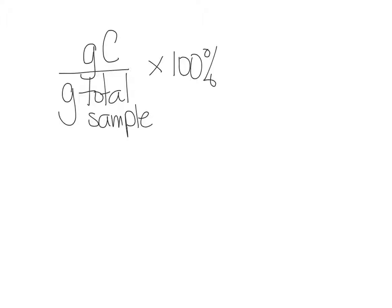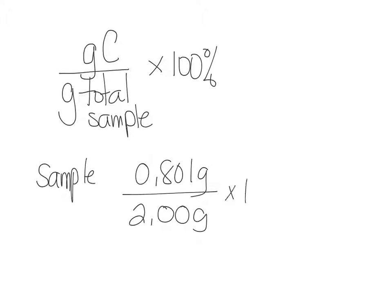How much carbon was in sample one? 0.801 grams. What was the grams of our sample? It was two grams. Multiply it by 100%, and that tells you the percent carbon.